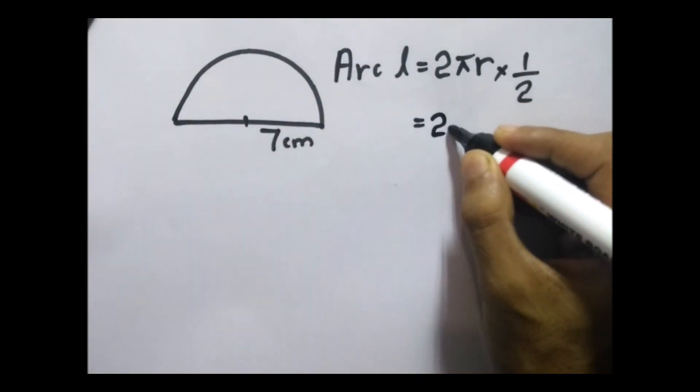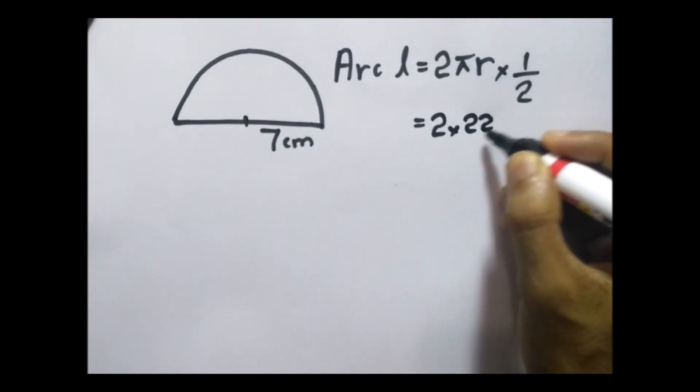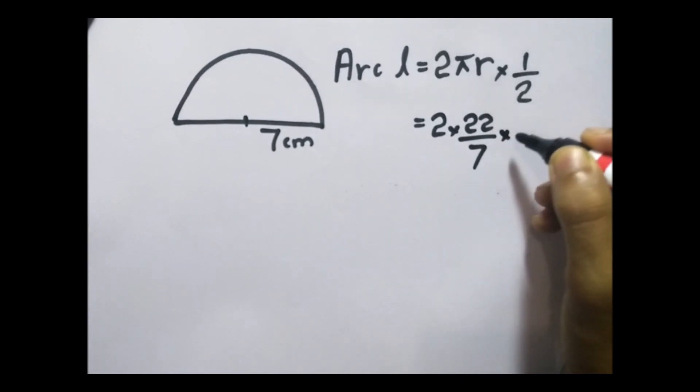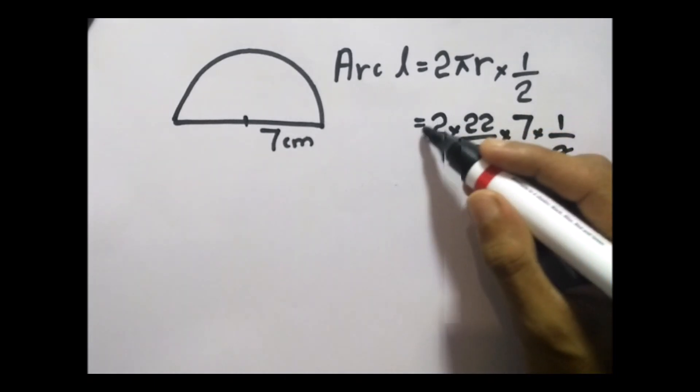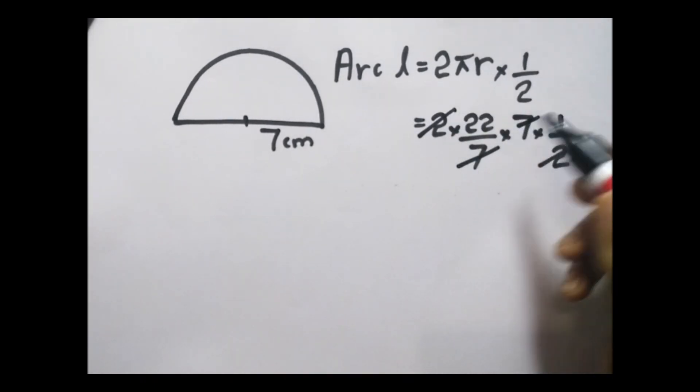So π means 22 over 7 and the radius is 7 centimeters, and we should multiply this by half. Now we can simplify this easily: 2 and 2 we can cancel, 7 and 7 also we can cancel. So only 22 is remaining, that means 22 centimeters.